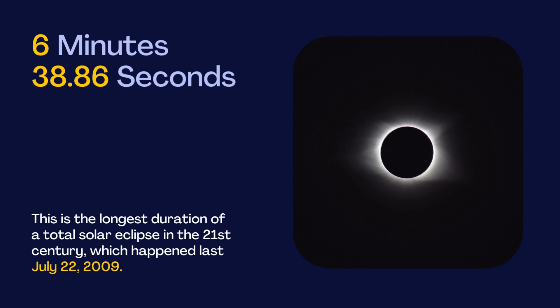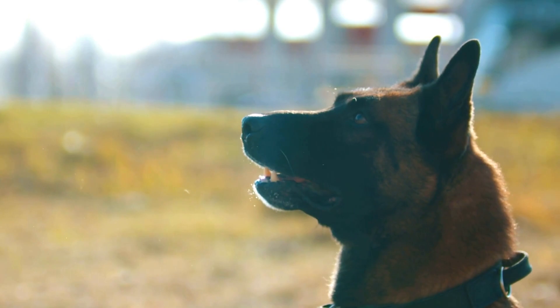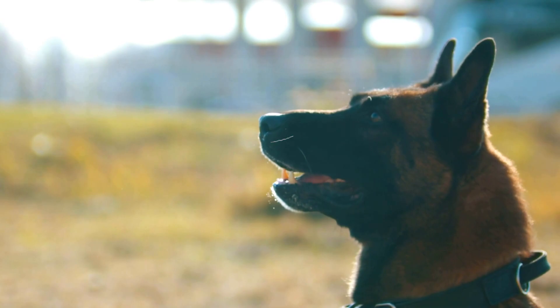While an eclipse can last a few hours, totality typically occurs for less than three minutes. Total solar eclipses can have noticeable effects on animals and plants, triggering behavior that aligns with their natural responses to dusk, night, and dawn within a very short time frame.